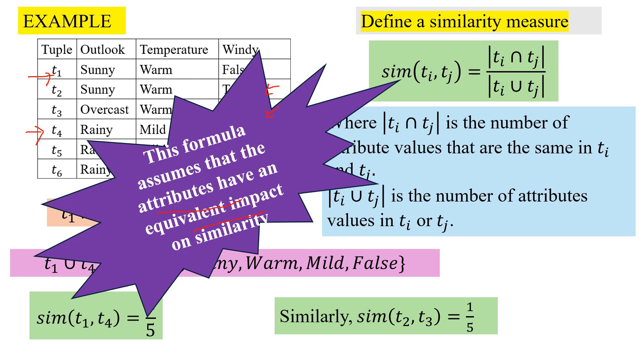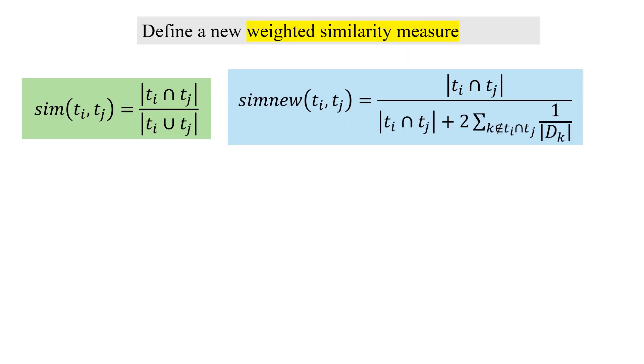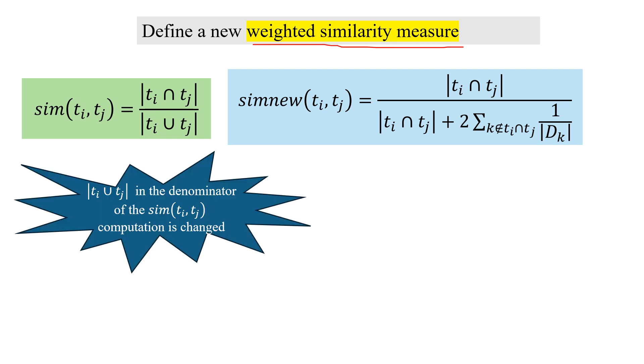If an attribute can take five values, another can take two values, another one can take 100 values, their impact should be different. That is what we will see in the weighted measure. We must consider the number of states that an attribute can take, like windy can take only false and true while other attributes work differently. Now we define a weighted similarity measure.